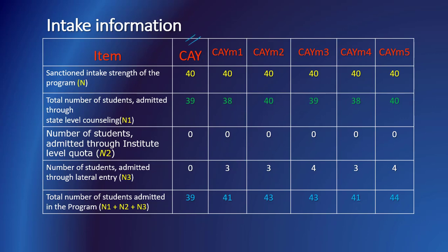CAY means current academic year. CAYM1 means current academic year minus 1, that is the previous academic year. Similarly, CAYM3 means current academic year minus 3. This batch of students has already passed out from the program — they are also called the last year graduate. Similarly, the next three batches have passed out; the second is last year graduate minus 1, and the third is last year graduate minus 2.